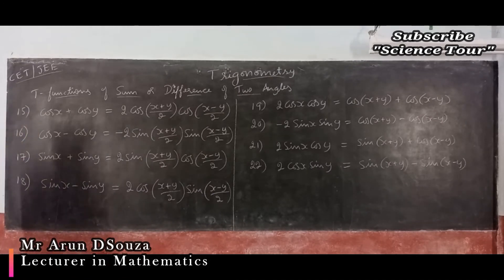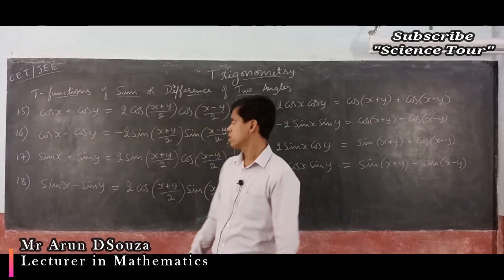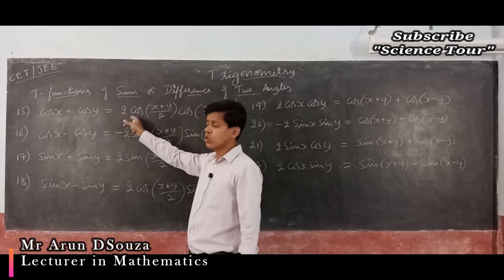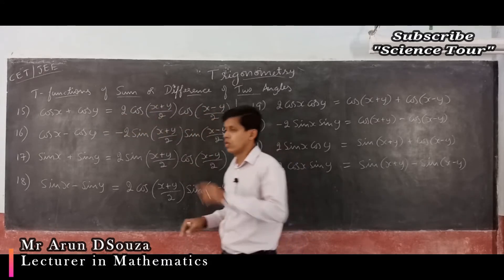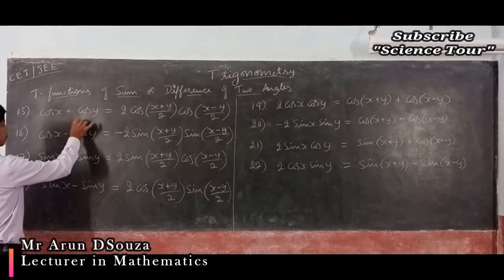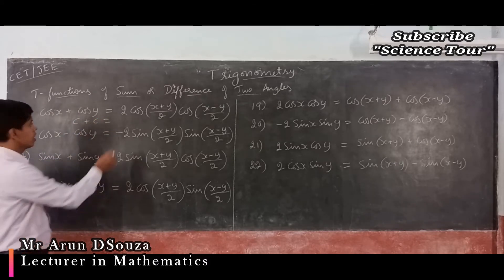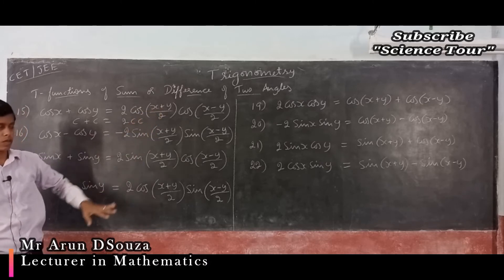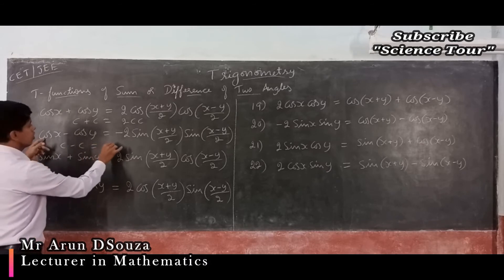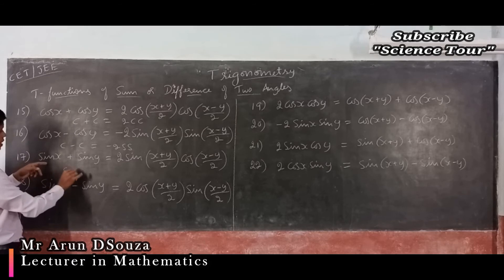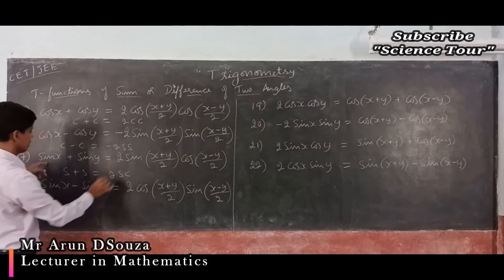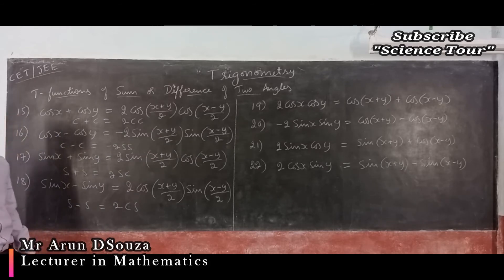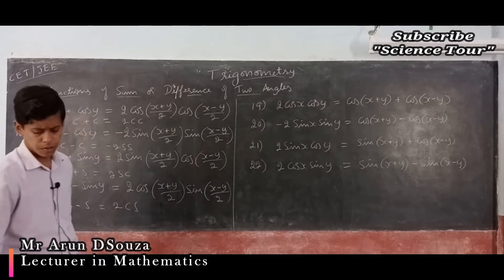Now formulas 15–18, the sum-to-product formulas: cos x + cos y = 2 cos((x+y)/2) cos((x−y)/2). You can remember this as 'C + C = 2CC'. Cos x − cos y = −2 sin((x+y)/2) sin((x−y)/2) — 'C − C = −2SS'. Sin x + sin y = 2 sin((x+y)/2) cos((x−y)/2) — 'S + S = 2SC'. Sin x − sin y = 2 cos((x+y)/2) sin((x−y)/2) — 'S − S = 2CS'.